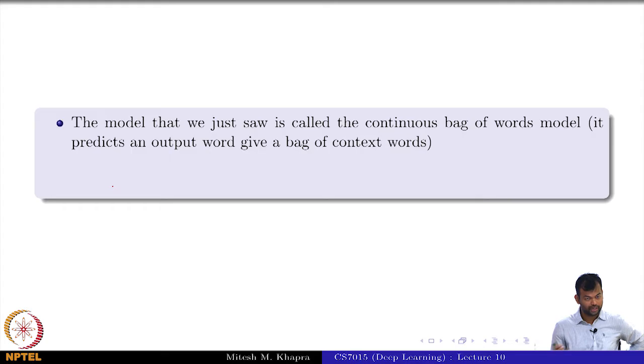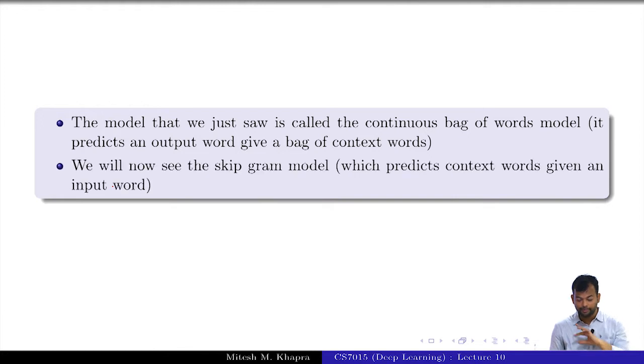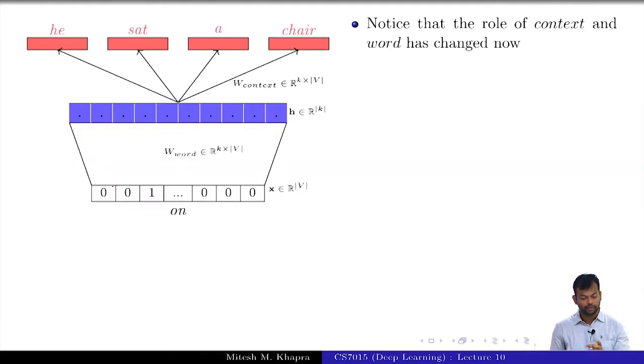The model that we just saw was known as continuous bag of words - it predicts the output given the context. Skip gram model does the reverse of that. You are given a word, you want to predict all the context words. Now I am given the word 'on', I am trying to predict the words which appear on the left and right side of it. How many prediction problems am I solving? How many predictions am I giving you? Four in this case, right?